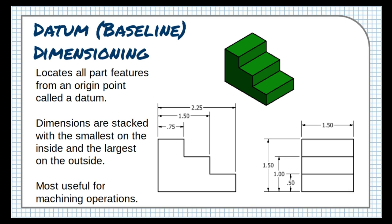This method essentially gives each edge, corner, or center point on the object a set of coordinates to locate it relative to the datum.